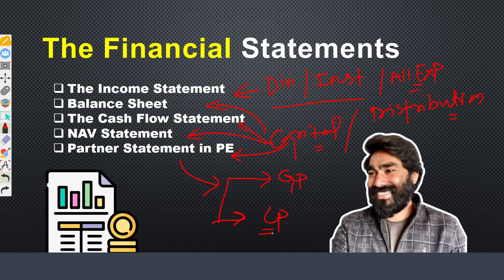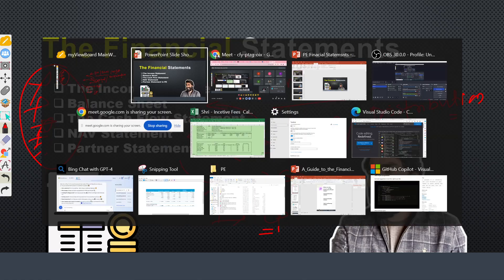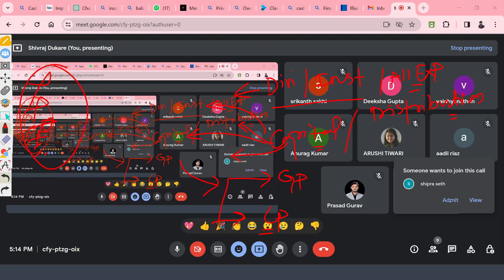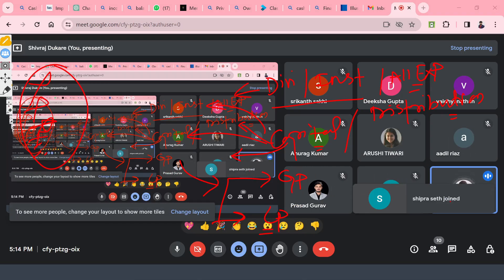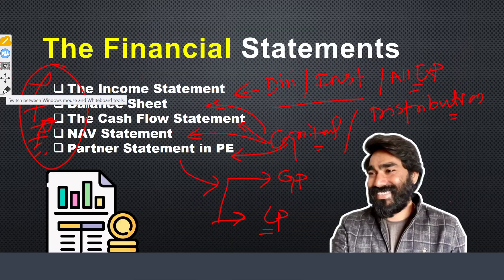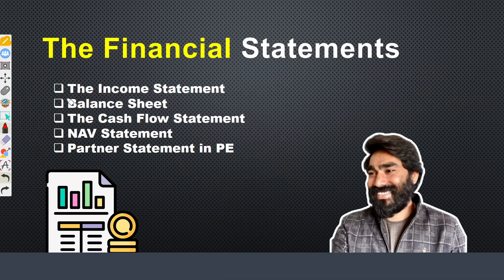Without financial statements in place, if someone asks for the NAV of a fund, you would have to aggregate thousands of transactions manually — an extremely tedious job. Financial statements help you quickly compute income, calculate net assets, and understand cash availability in the fund books.